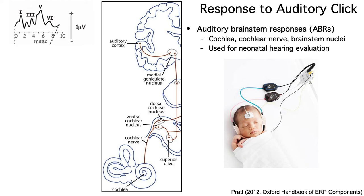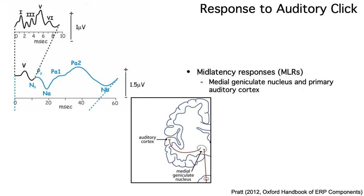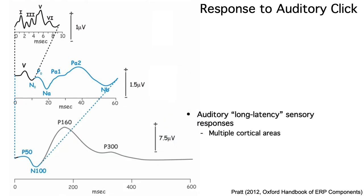If we look on a longer time scale and use different filter settings, we can see the mid-latency auditory responses, which are generated in the medial geniculate nucleus and the primary auditory cortex. On an even longer time scale, we can see what are called the long-latency auditory responses, which come from a variety of cortical areas.